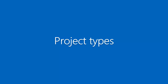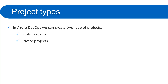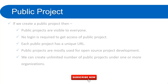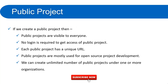Before creating a new project, let's understand the different types of projects in Azure DevOps. There are two types: public projects and private projects. Public projects are publicly open — since it is clear from the name, if you create a new public project these things will happen: public projects are visible to everyone.